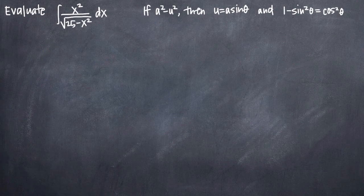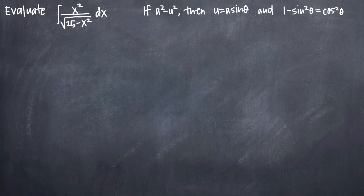In this particular problem, we've been asked to evaluate the integral of x squared divided by the square root of 25 minus x squared. So the first thing we need to do, since this is a trigonometric substitution problem, is identify the form of our relationship between a squared and u squared.